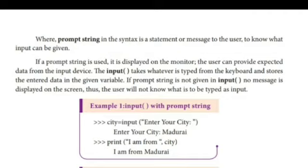The user can provide expected data from the input device. For example, consider first one: input with prompt string. At prompt, city equals input within bracket within quotes "Enter your city". Enter your city, we have given Madurai. Next prompt: print "I am from", city. Answer will be printed as "I am from Madurai".